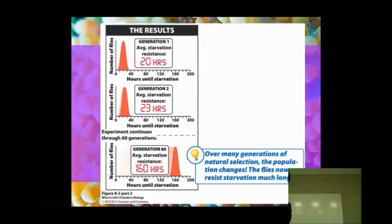Over generations, natural selection, which is what allows them to be able to survive and reproduce and pass their traits on to their offspring, now we've got flies that are much more starvation resistant than the original flies that we started with.